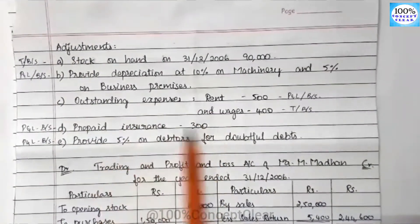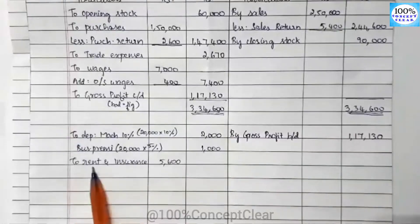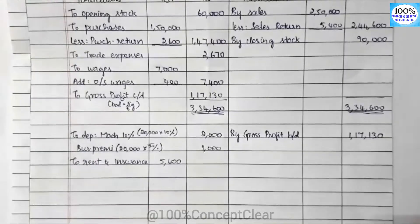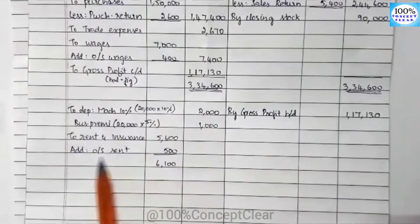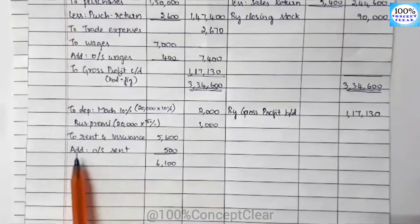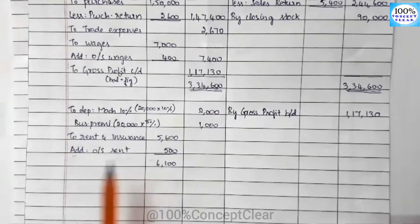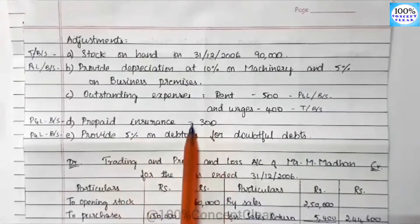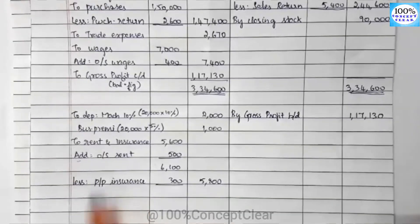Prepaid insurance is minus. We have rent and insurance $5,600. Outstanding rent is $500. We add outstanding rent: $5,600 plus $500 equals $6,100. Then, prepaid insurance is $300 — prepaid amount is less. So $6,100 minus $300 equals $5,800. That is the rent and insurance amount in P&L account.